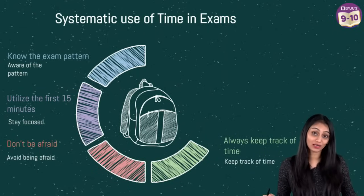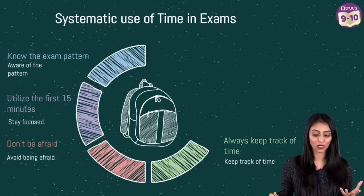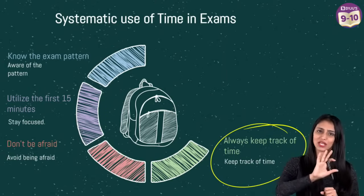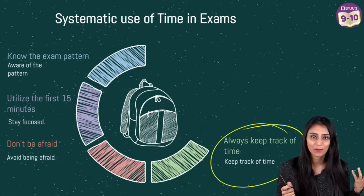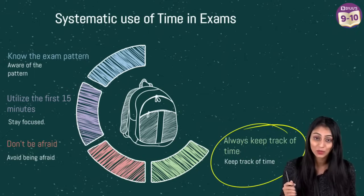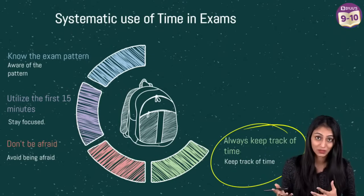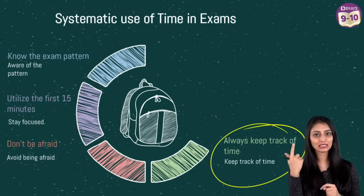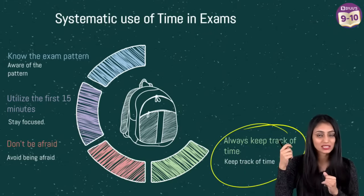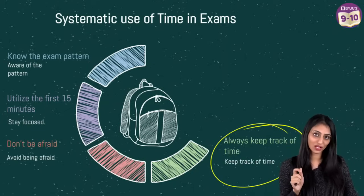Another important thing which we generally do not realize: please carry a wristwatch with you and wear it during the exam. It's going to actually help you a lot because it helps you keep track of time. What I used to do is keep the watch on the table so while solving questions I would know how much time I'm spending on each question and how much time is left. Basically it's multitasking — you're simultaneously thinking about time remaining and questions remaining, so you know whether to increase your pace or if you're going at the right pace.